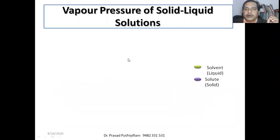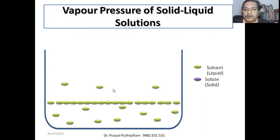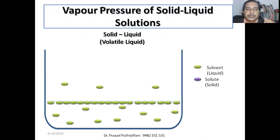Before discussing vapor pressure of a solid in liquid, I took two samples — two components, solvent as well as solute — and two different colors are given to identify them. Consider a container containing the solvent molecules. Solvent molecules are liquid in nature and solute is solid in nature. Therefore this is a mixture of volatile liquid and non-volatile solid.